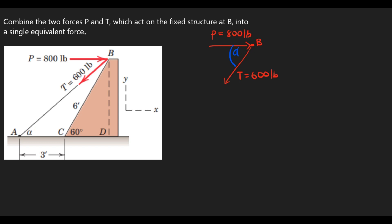So all you have to do now is find alpha. If you are able to find alpha, then you can find the components of force T. To calculate for alpha, I am going to consider this triangle here. I will name this side as H — that's the height — and then this unknown side as S. You know this side to be 3 feet and then this side to be 6 feet.